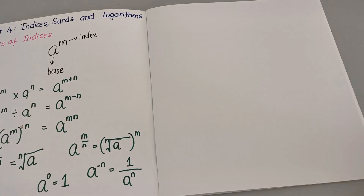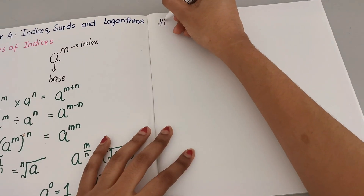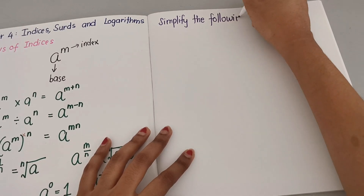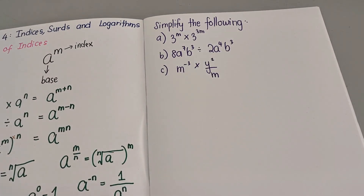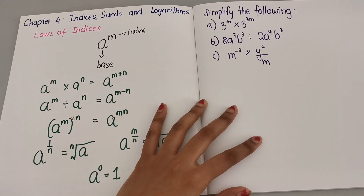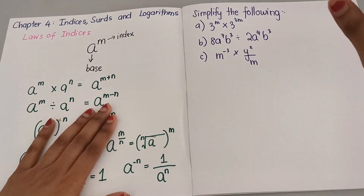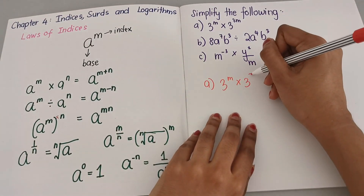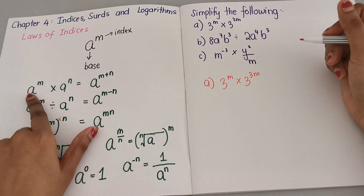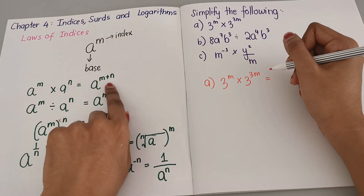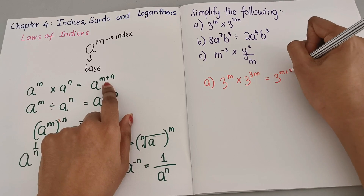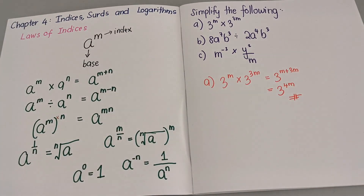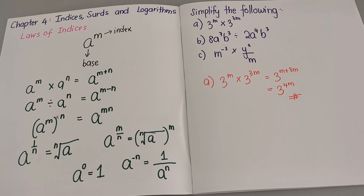So I'm going to give you examples here. Simplify the following. The first one, A: 3 to the power of M times 3 to the power of 3M. Now is the base the same? Yes. The base is the same and we have a times, so if times means we have to plus the index. So that means it's going to be 3 to the power of M plus 3M, which equals 3 to the power of 4M.